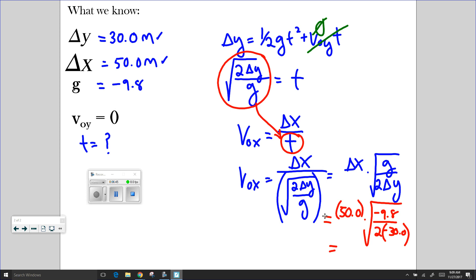And when I plug this into my calculator and solve, I say 50 times the square root. And by the way, I can put this in my calculator all in one step. And then I don't have to round to correct significant figures until the very end. Negative 9.8 divided by negative 60, because 2 times negative 30 is negative 60.